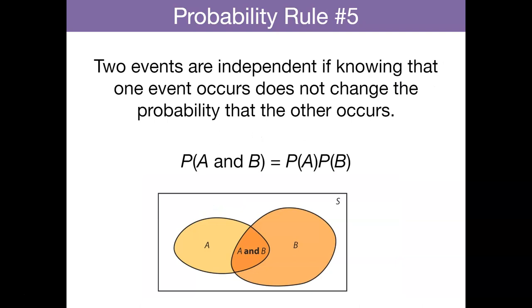We also need to know whether or not two events are independent. The next probability rule is that two events are independent if knowing that one event occurs does not change the probability that the other occurs. Now, instead of the addition rule, we'll call this the multiplication rule. The probability of A and B happening is the multiple of probability of A and probability of B. Really, if two events, A and B, do not influence each other, and if the knowledge about one doesn't change the probability of the other, we can say that the two events are independent.